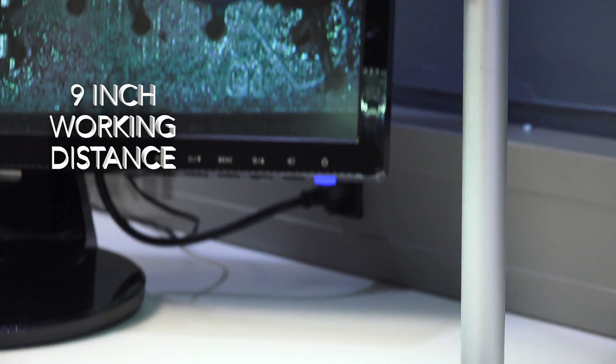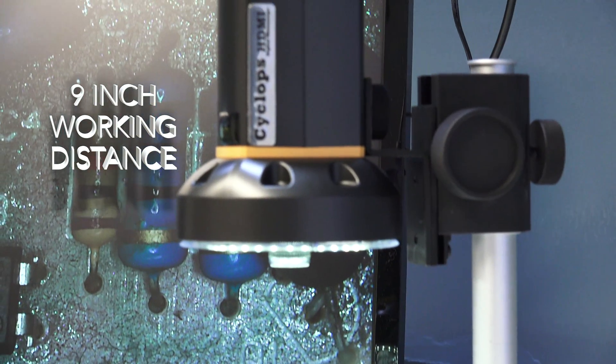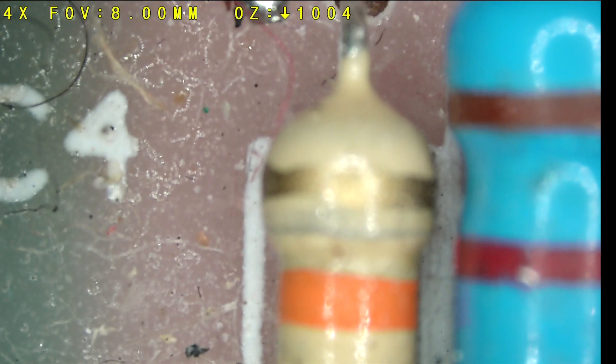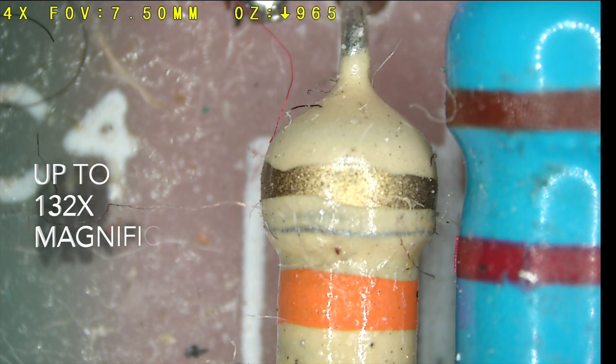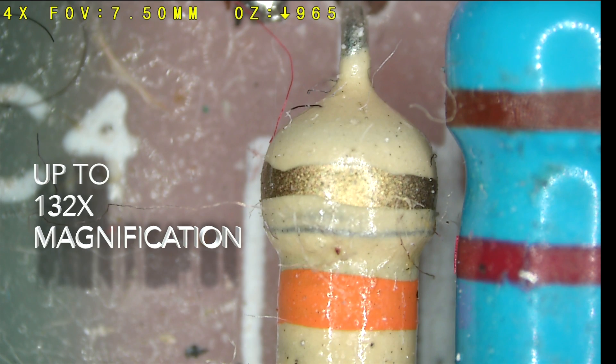The Cyclops HDMI system features a large 9-inch working distance with a magnification range up to 132 times on a 21.5-inch HD monitor.